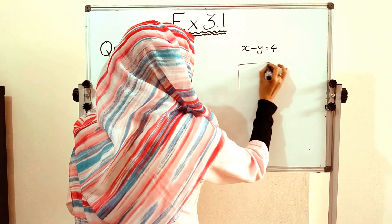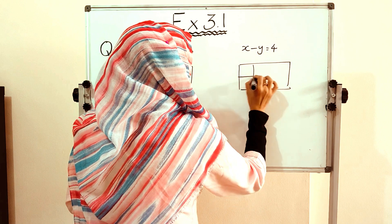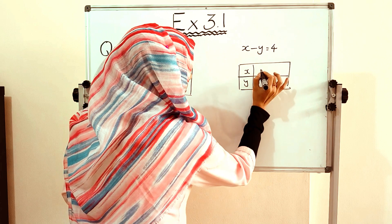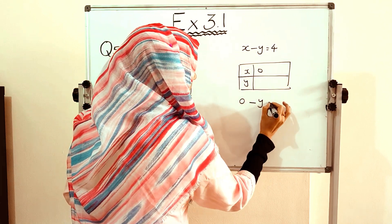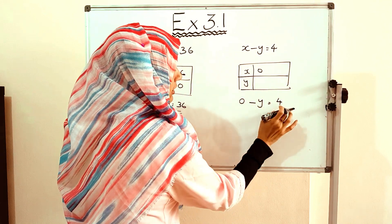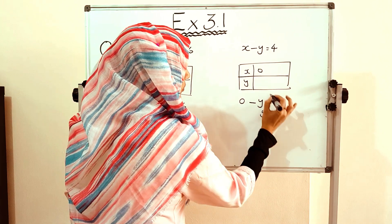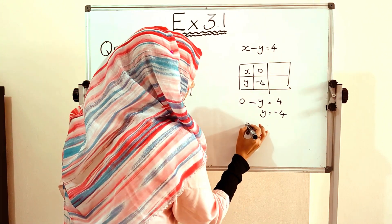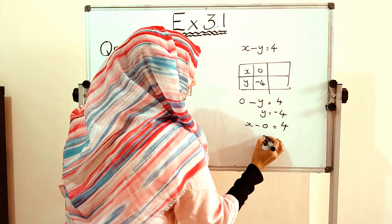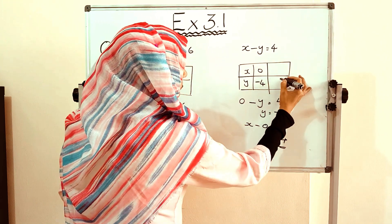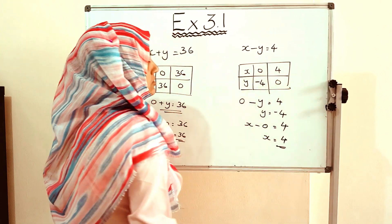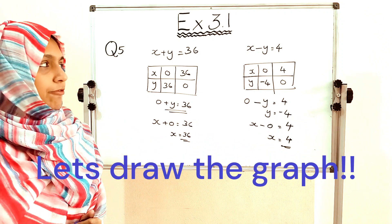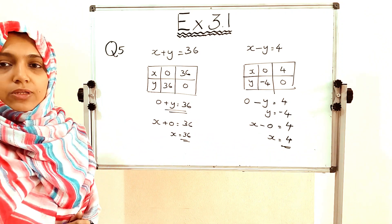For the second equation, let us find points for x and y. When x = 0, then 0 − y = 4, so y = −4. When y = 0, then x − 0 = 4, so x = 4. These are the points for both equations. From these values, let us draw a graph and find the solutions.